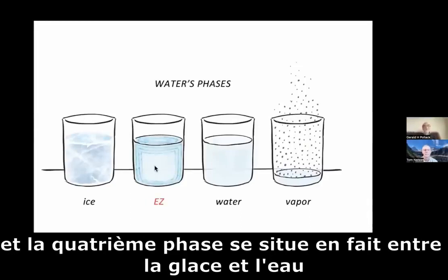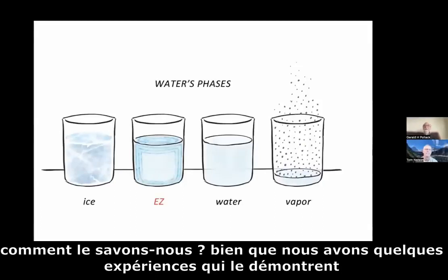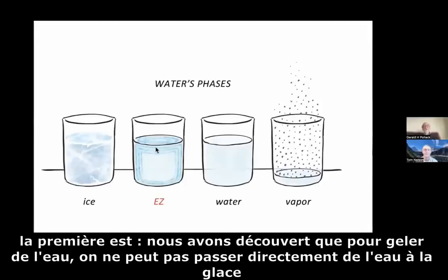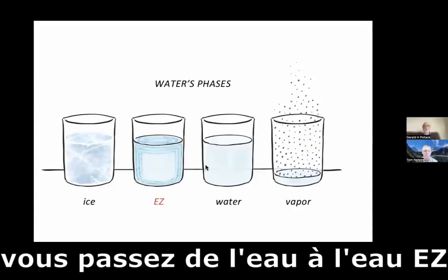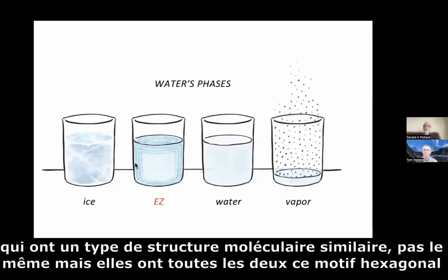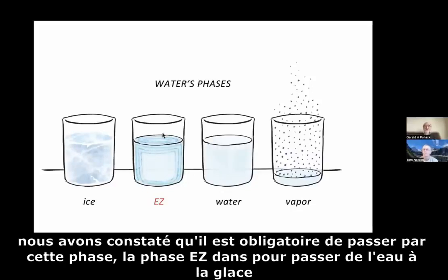The fourth phase actually sits between ice and water. We have a few experiments that demonstrate this. The first is that in order to freeze water, you cannot go directly from water into ice. You go from water into EZ, which has a similar — not the same, but similar — kind of molecular structure as ice. They both have this hexagonal motif. We found that it's obligatory to go through this EZ phase in order to go from water to ice.